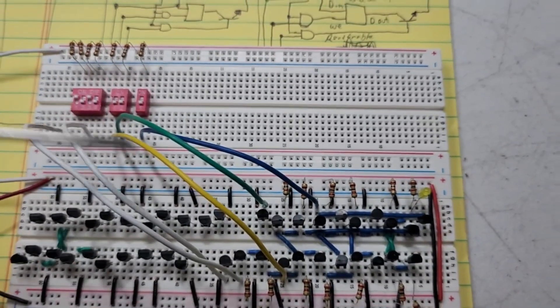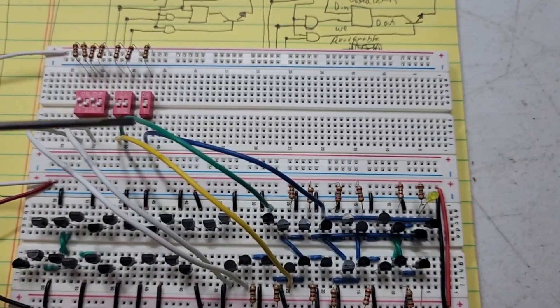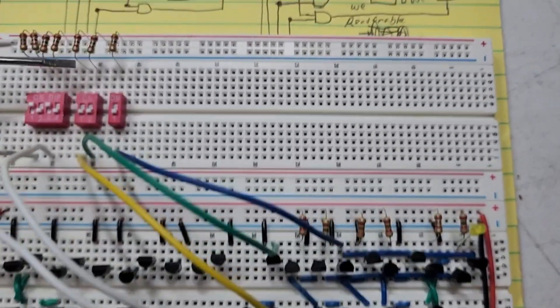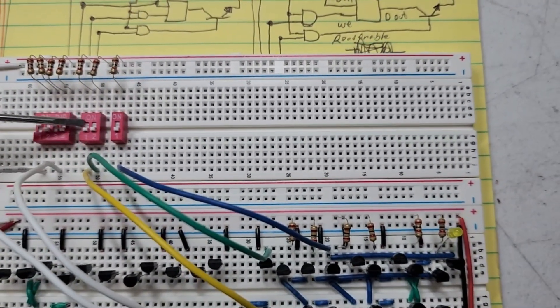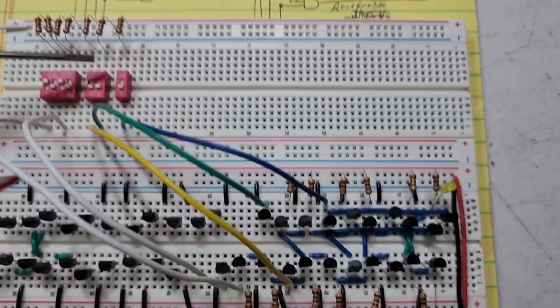Whichever one is selected will be the one that gets read to or read from or written to. And then these are my read and write enable. So if I want to read or write, and then this is my data. Okay, so that breaks it down pretty simple, right?